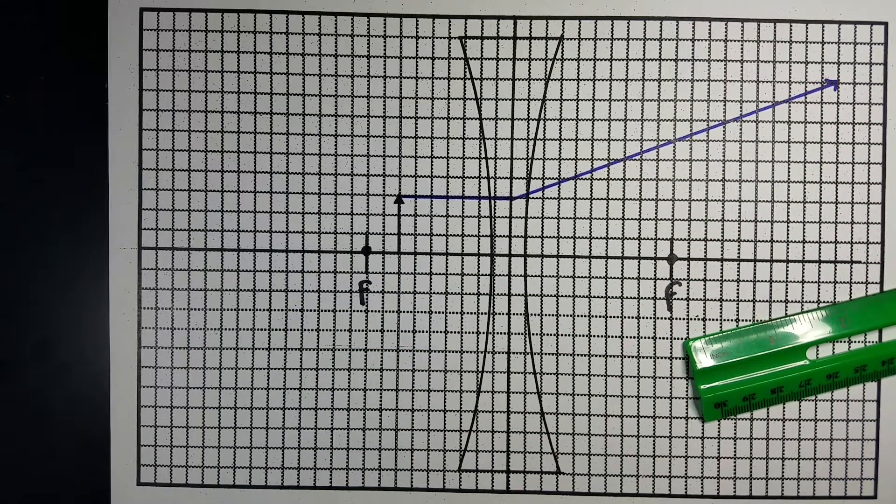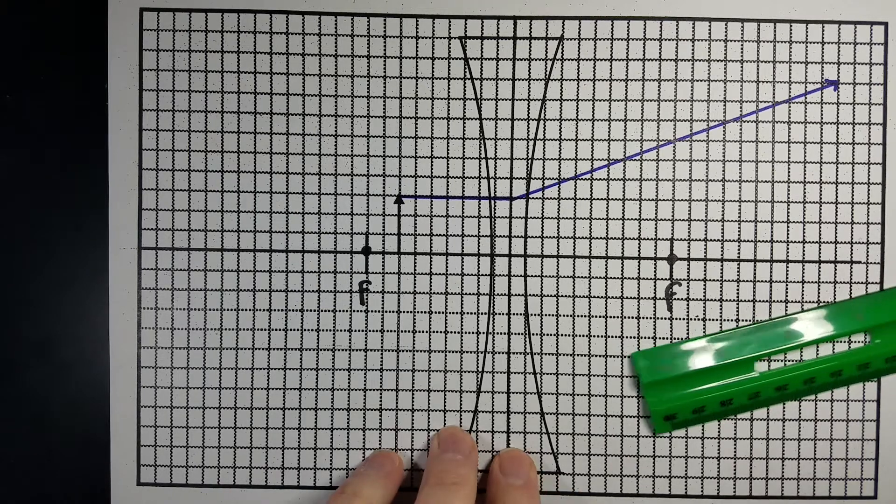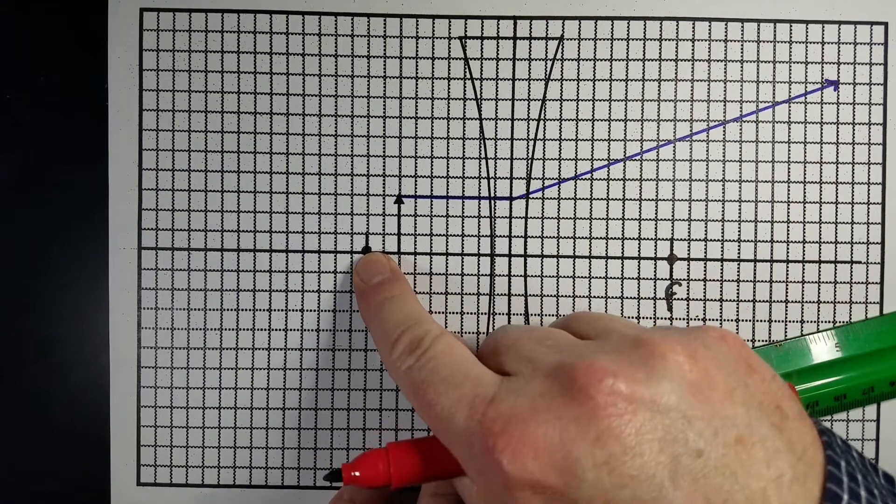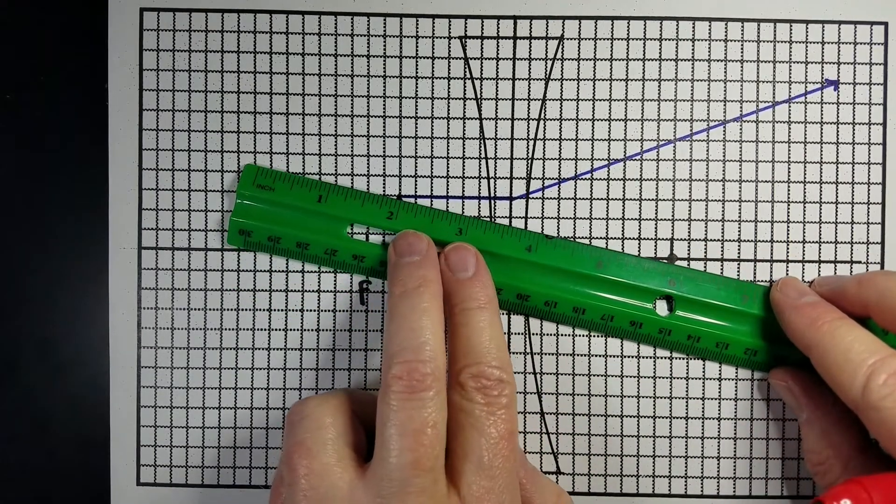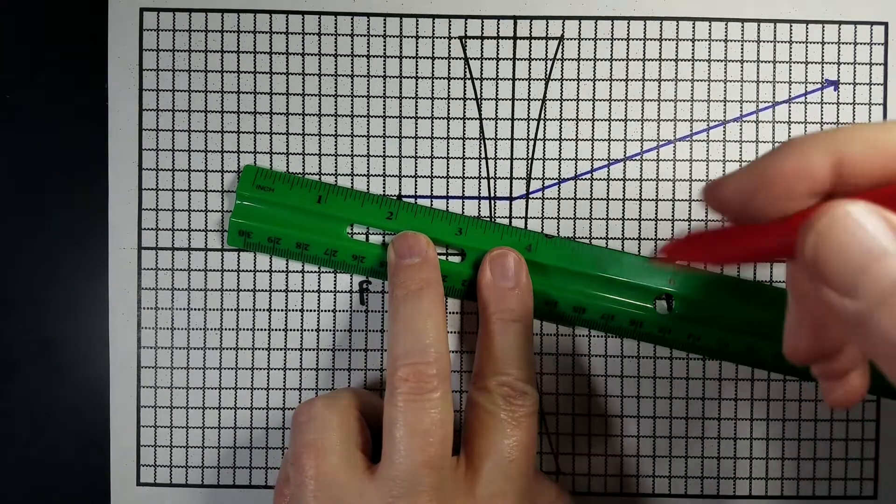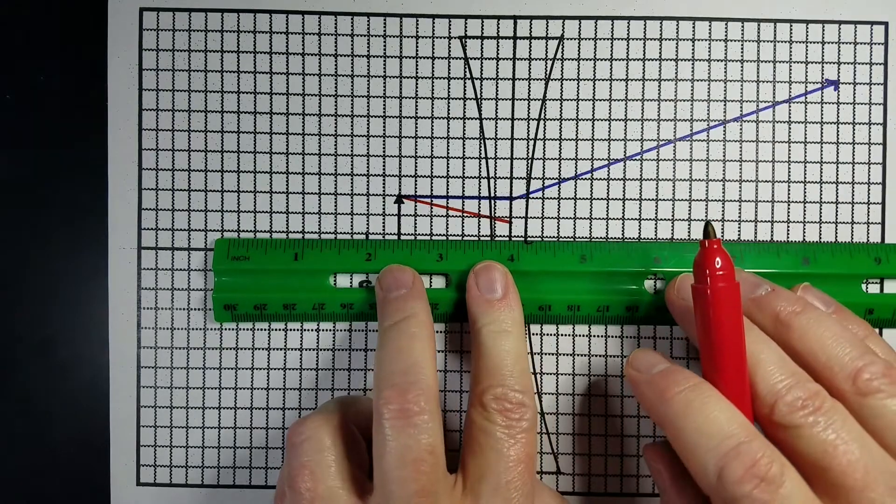The second ray, again, since we aim towards this focal point, we've got to use this one. So we're going to go towards that focal point until we hit the center of the lens, and then it's going to refract parallel.